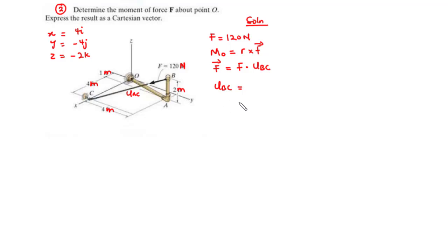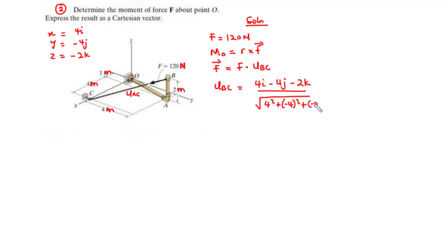Therefore, the unit vector U_BC equals (4I − 4J − 2K) divided by the square root of the sum of the squares of the coefficients of I, J, and K. So we have 4 squared plus negative 4 squared plus negative 2 squared, which is 16 + 16 + 4 = 36, and the square root of 36 is 6.